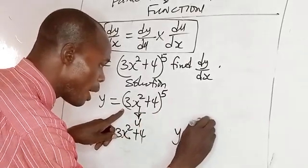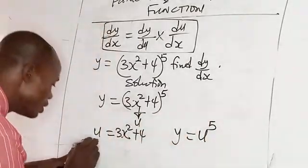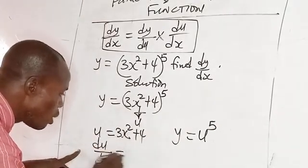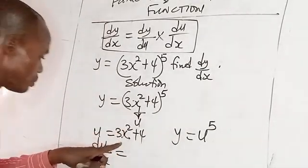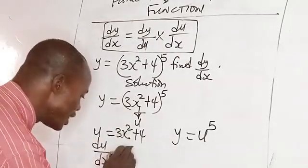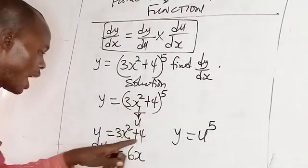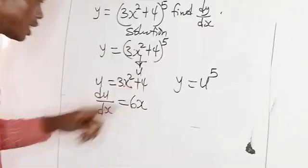Now du/dx equals, let's differentiate: 3x², 2 times 3 is 6x. And this is constant. Derivative of constant is zero.